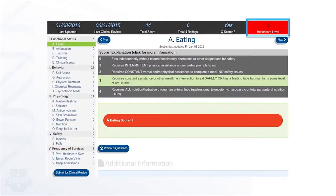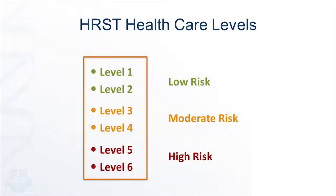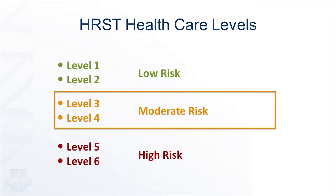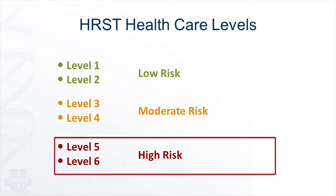Each of the 22 rating items will be scored in a similar manner until a final overall health care level is assigned. The HRST health care level is very important. It plots the person on a spectrum of risk ranging from level 1 to level 6. Levels 1 and 2 are low risk, levels 3 and 4 are moderate risk, and levels 5 and 6 are high risk. Increasing health care levels of any degree should always be of concern and promote immediate action. These health care levels can tell us a lot about lifespan and mortality.